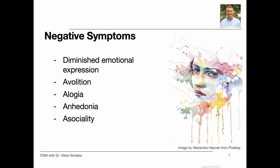Avolition is a decrease in motivated, self-initiated, purposeful activities — the individual may sit for long periods of time and show little interest in work or social activities. Other negative symptoms include alogia, anhedonia, and asociality. Alogia is manifested by diminished speech output. Anhedonia is the decreased ability to experience pleasure from positive stimuli or a degradation in the recollection of pleasure previously experienced. Asociality refers to the apparent lack of interest in social interactions, which may be associated with avolition or limited opportunities for social interactions.